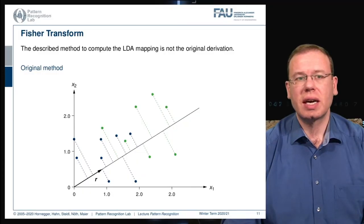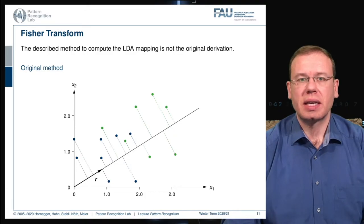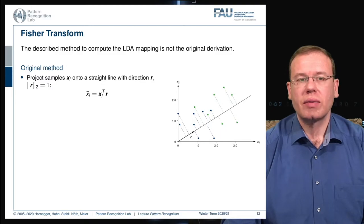Here we see the original idea that was used to derive the LDA mapping. The original idea is that you want to project onto the direction that is essentially maximizing the between-class information while minimizing the spread within the classes. This is then introduced as the direction R, and here we stay for the time being with a two-class problem, so we only have classes one and two.